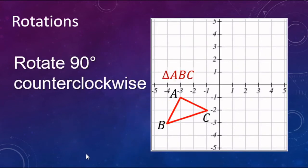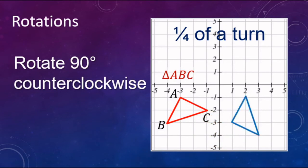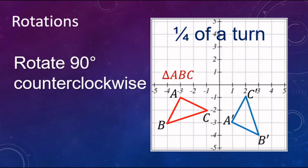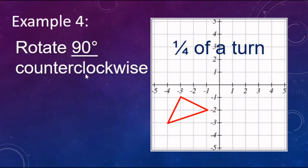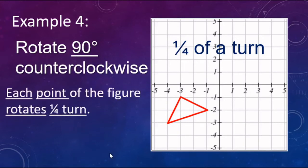Now if we're doing this on a shape, we go vertex by vertex. Here's what a quarter of a turn looks like — that's the 90 degree counterclockwise. Triangle ABC goes there for a quarter of a turn — there's your A prime, B prime, C prime, the image of triangle ABC after a 90 degree counterclockwise rotation. When we do this on pencil and paper, each point rotates one quarter of a turn. Starting with the coordinate negative three, negative one — a quarter turn ends up at one, negative three.